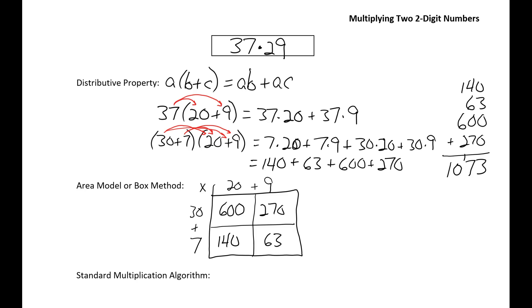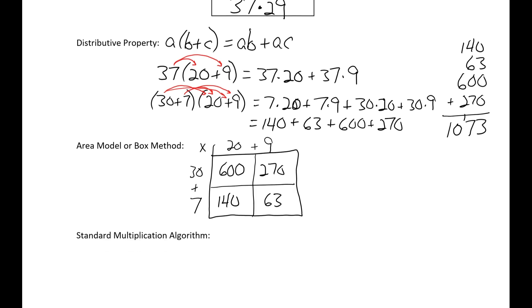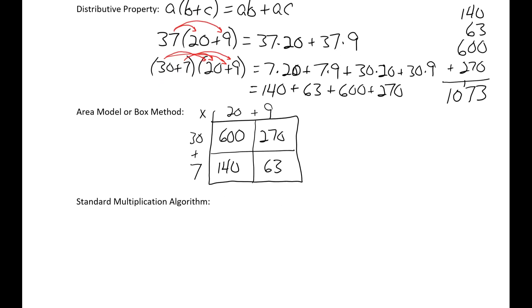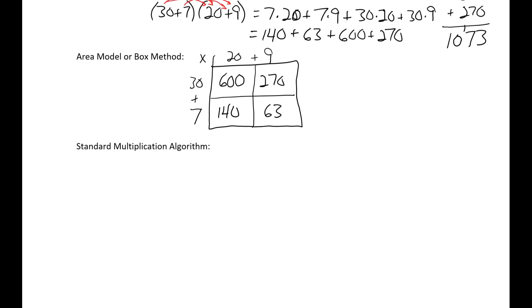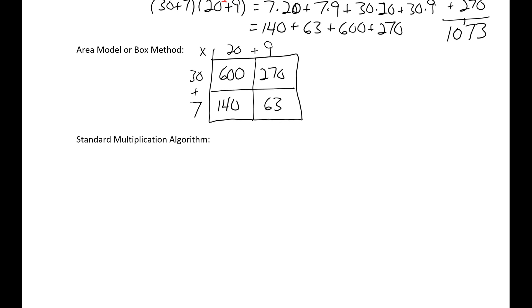Well, this is where the standard algorithm for multiplying two two-digit numbers comes from. It's just the distributive property. So we typically write the two numbers that we're going to multiply like this: one on top of the other, line underneath, and a multiplication symbol next to it.